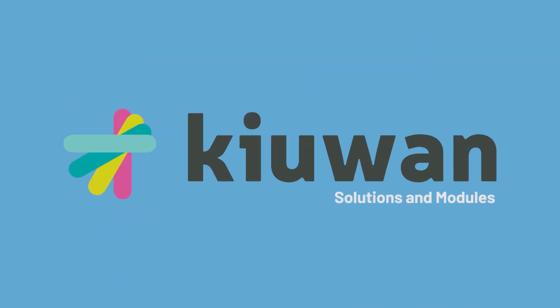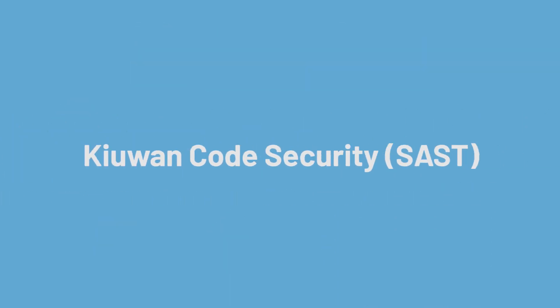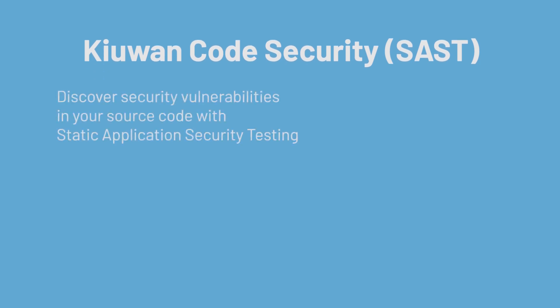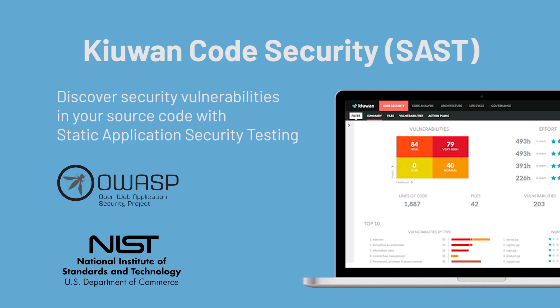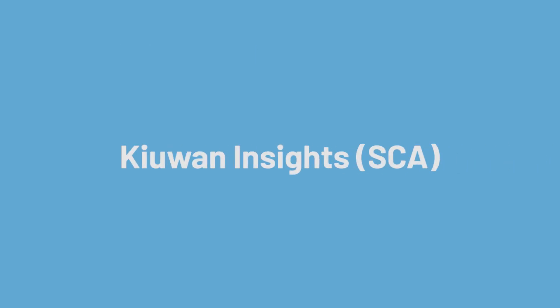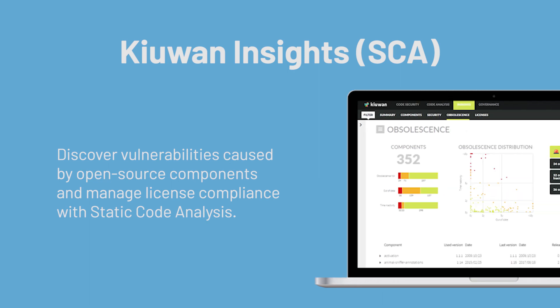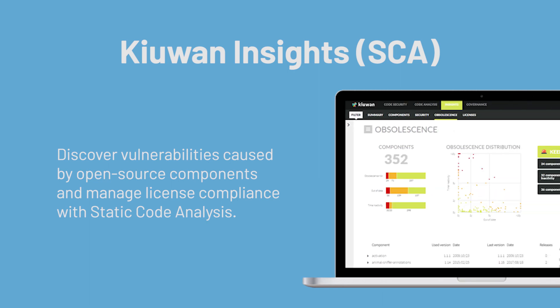Let's talk a little bit about KIAWON solutions and modules. KIAWON Code Security is a SaaS solution that discovers the security vulnerabilities in your code, applying leading security standards like OWASP, CWE, NIST, and PCI DSS.